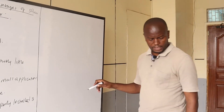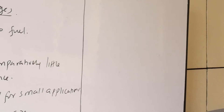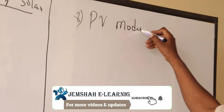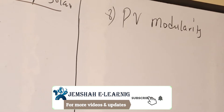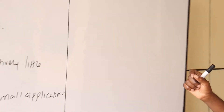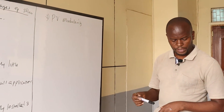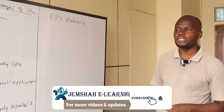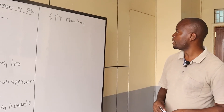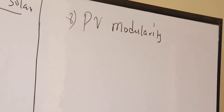Number eight, we can talk about PV modularity. The solar modules can be added incrementally until whatever needs to be supplied is met. You can always increase the available power by adding several modules to the system in order to meet the required demand.